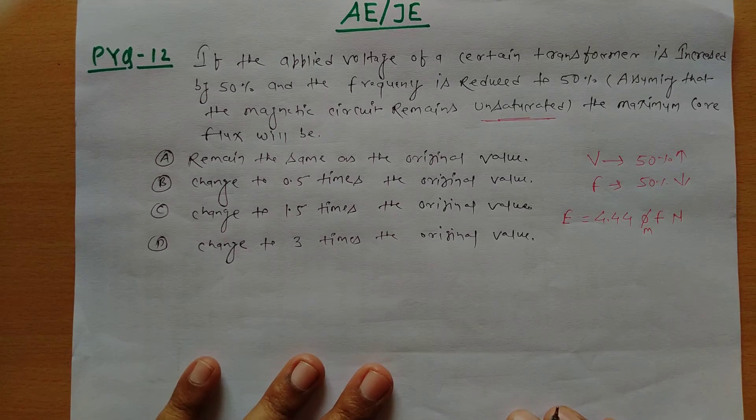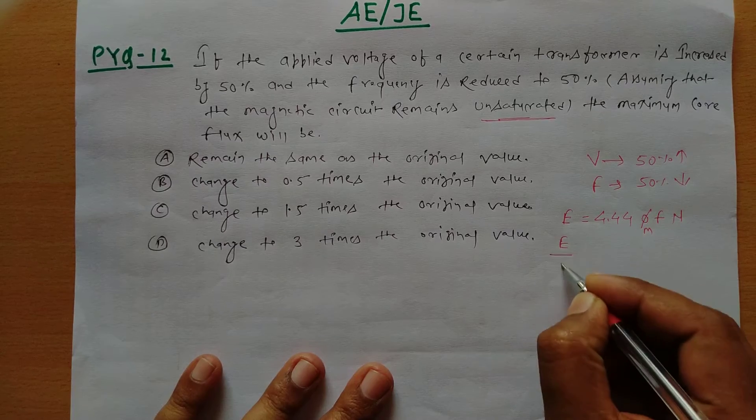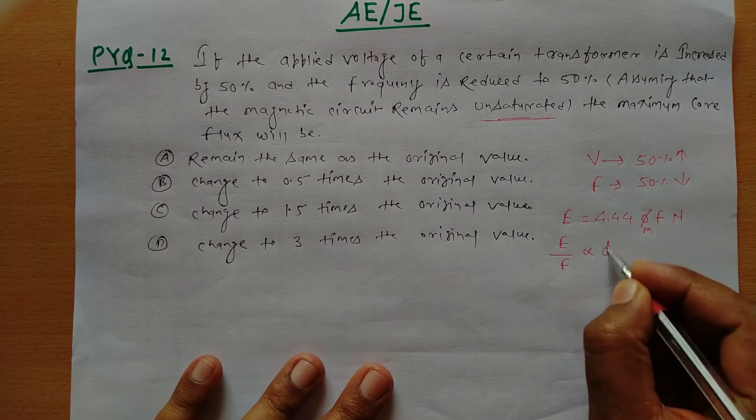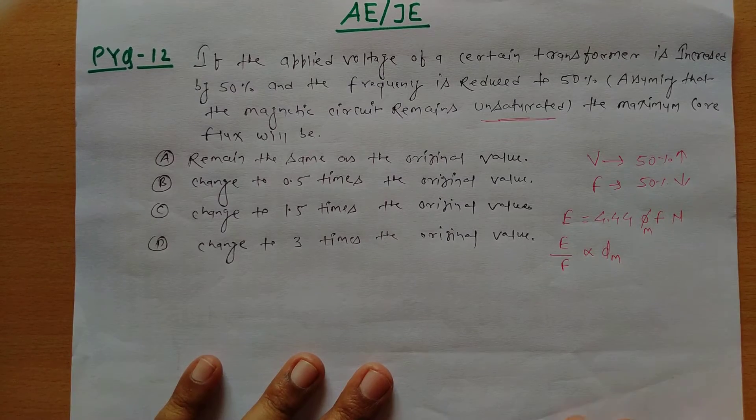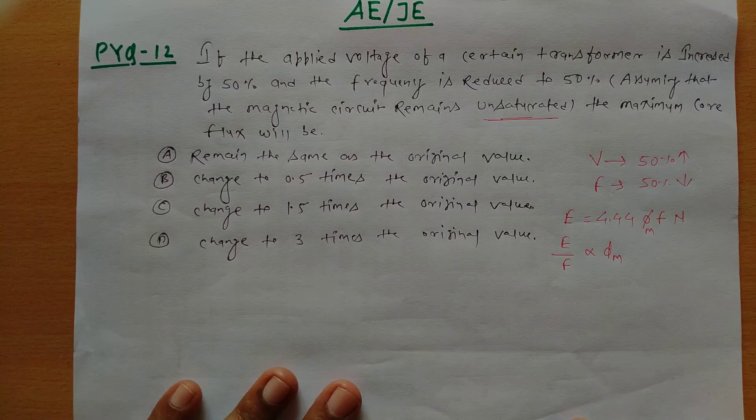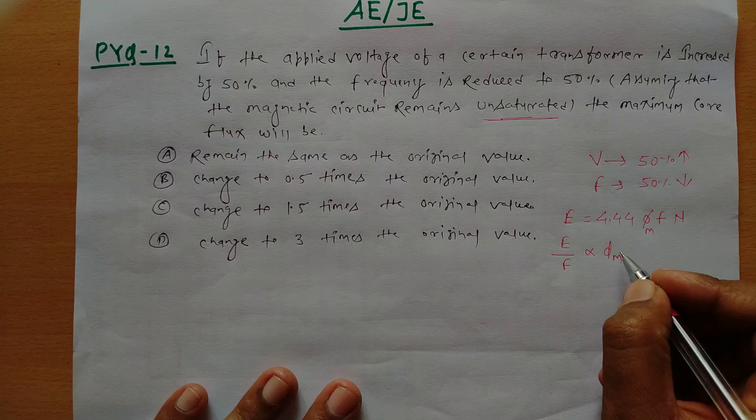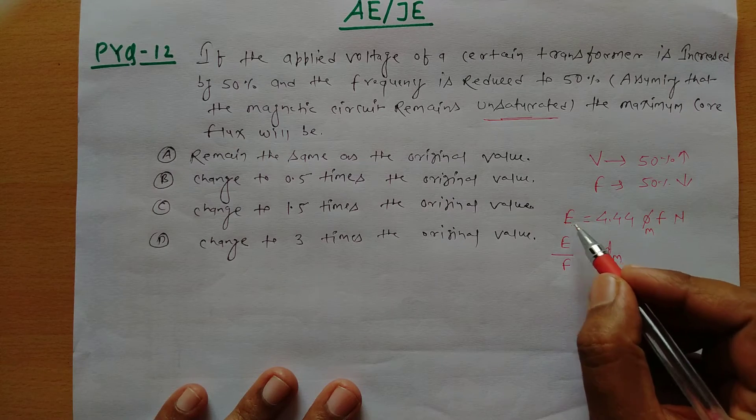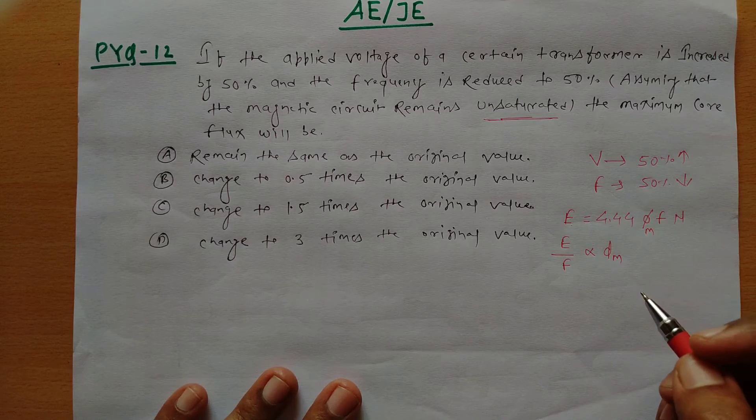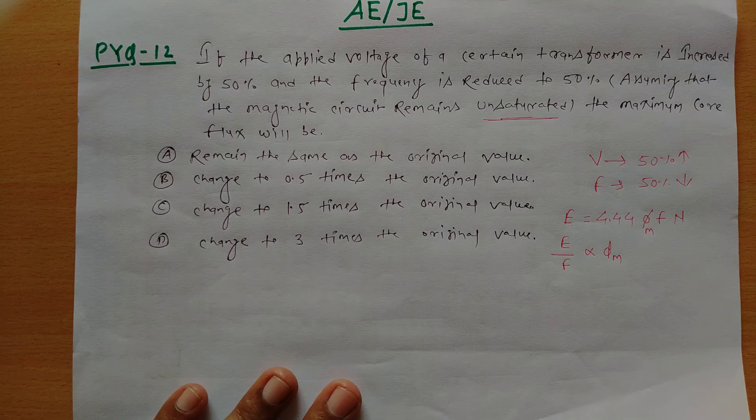So if we derive a relation from here, E by f directly we can say becomes proportional to φm. Now see that if the applied voltage increases by 50 percent and frequency decreases by 50 percent, right?